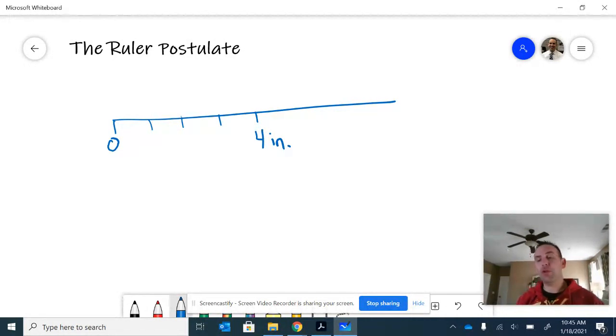But it's also true, the ruler postulate pretty much states that you can use any two points on this ruler or measuring device to determine a distance. So for example, if you had one point here and one point here and you wanted to find the distance between them, there's a couple ways to get at it.